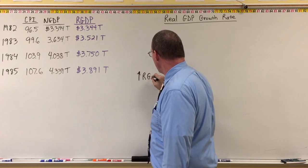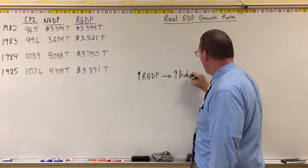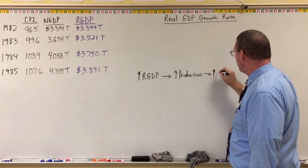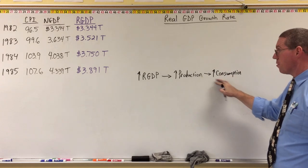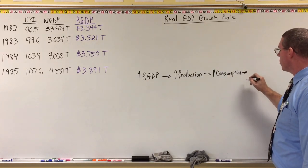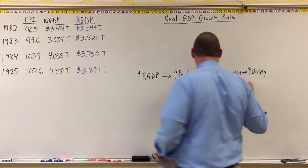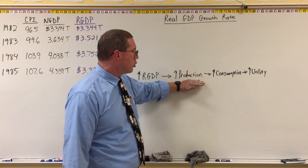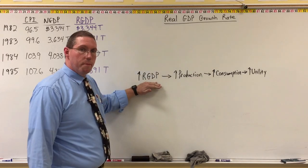So if real GDP goes up, that indicates that production has gone up, or output has gone up. And if production has gone up, then that probably means that consumption has gone up, meaning people are consuming more stuff because there's more stuff being made, because there's more stuff being recorded as purchased, and if more stuff is being consumed, then that means that people are experiencing more utility in our economy. So we want this number to be higher, but we can't measure production directly, so we measure the sale of the products in real GDP.